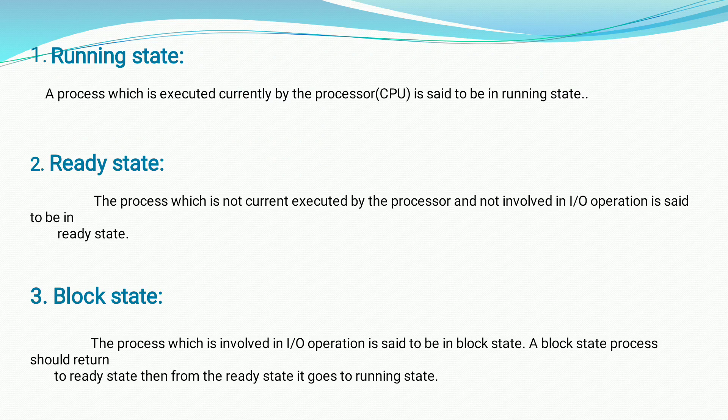A running state: a process which is currently being executed by the CPU is said to be in the running state. A ready state: the process which is not involved in any IO operation and is waiting for the CPU. A block state: the processes which are involved in the IO operation are said to be in the block state.